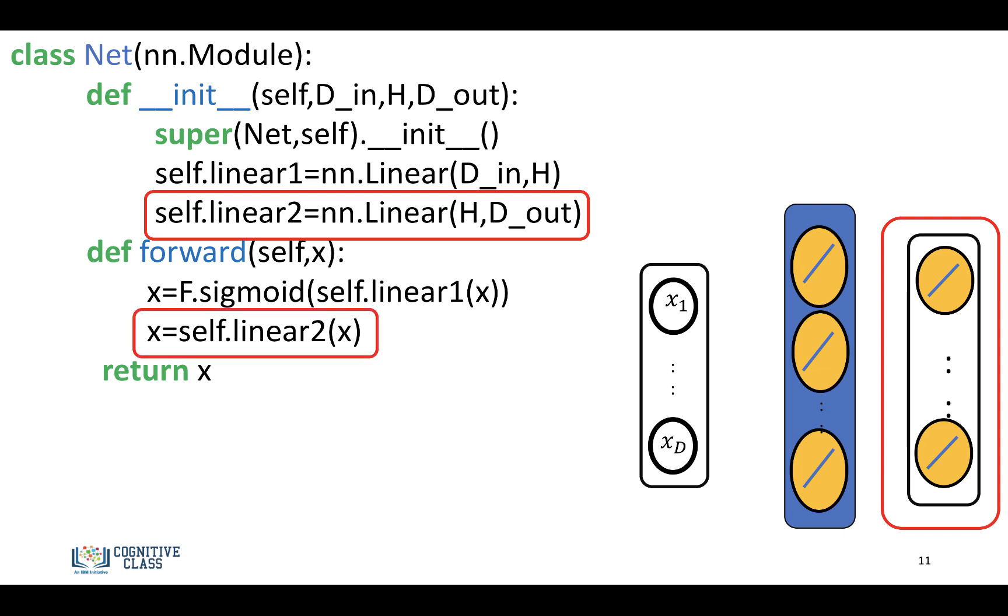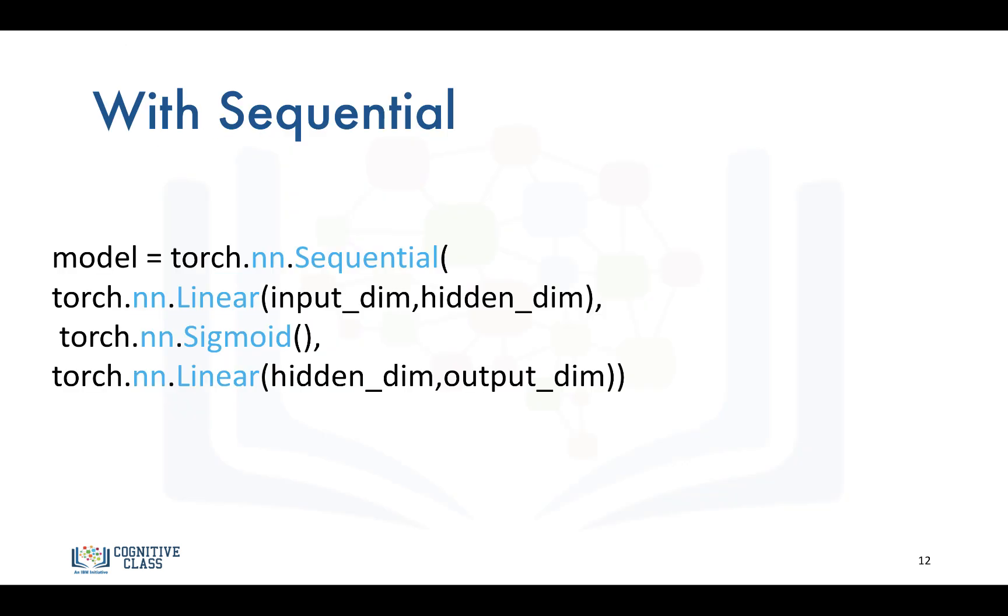D_out will be the number of classes. In our last output, we won't apply a sigmoid activation function. We can also do it using the sequential module, where D_out is the number of classes we'd like as an output.